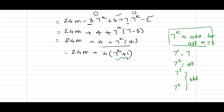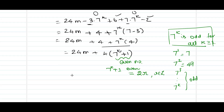What about 7 power k plus 1? Since 7 power k is odd, adding 1 to it gives the consecutive number, which is obviously going to be even. So 7 power k plus 1 is an even number, and we can express it as 2 times of r, where r belongs to the set of integers. Hence in the last stage, 7 power k plus 1 can be replaced by 2 times r.